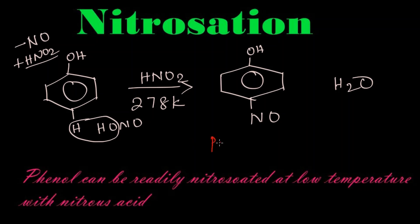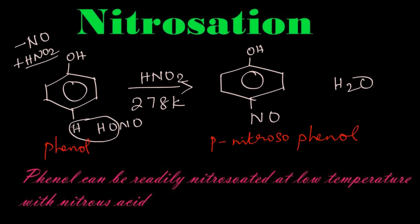The name of this compound is para-nitrosophenol. Phenol can be readily nitrosated at low temperature with nitrous acid, and we get para-nitrosophenol.